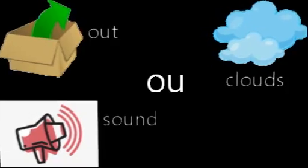This is the sound you should know — the 'ow' sound. In the top left corner we have a box and the arrow is coming out — 'out'. In the top right corner we've got some clouds — 'clouds'. In the bottom left corner we have a megaphone making a sound — 'sound'. This 'ow' sound is most usually found in the middle of the word, except in cases like 'out' where it is at the beginning.